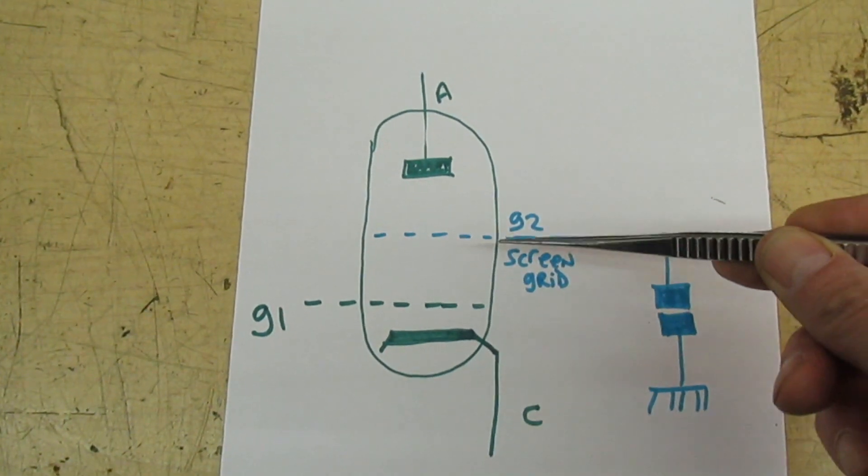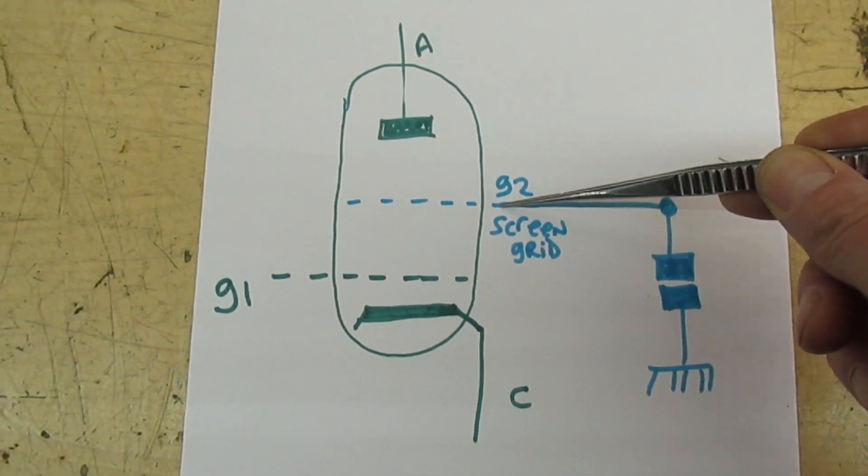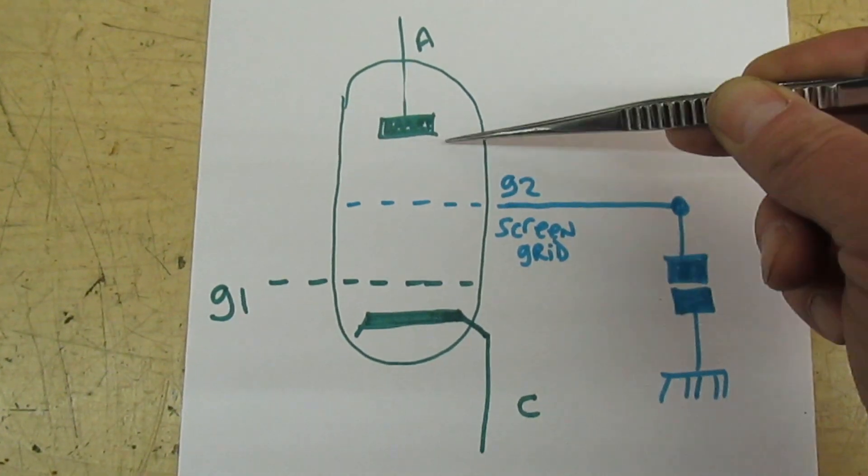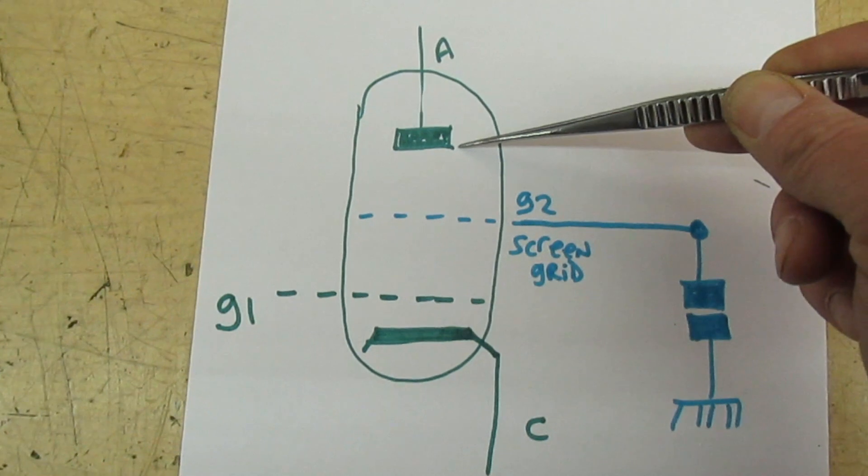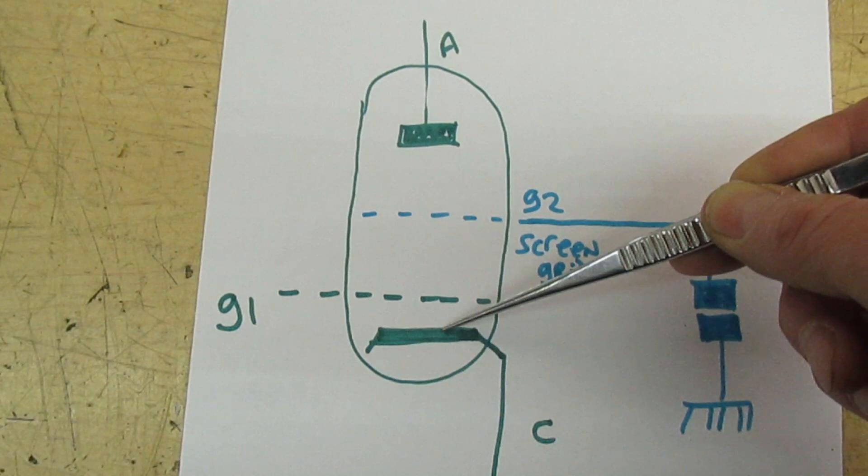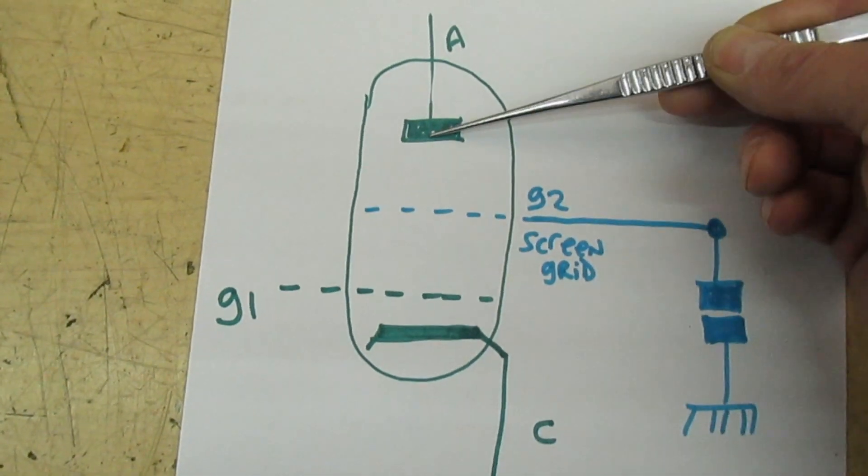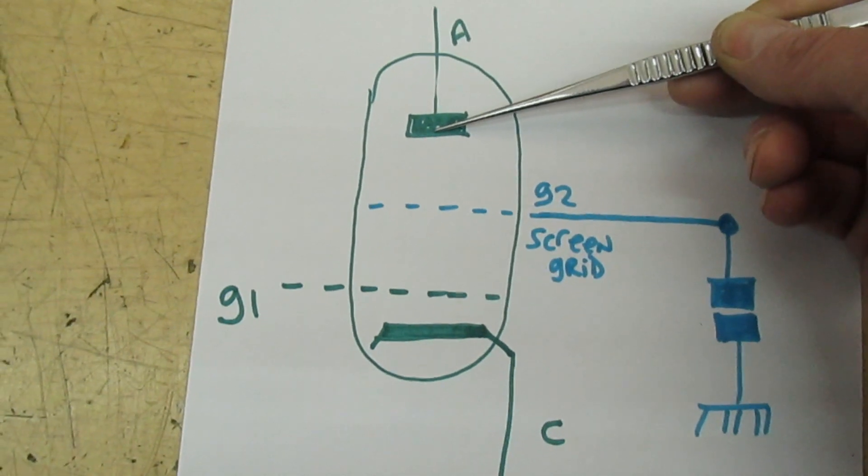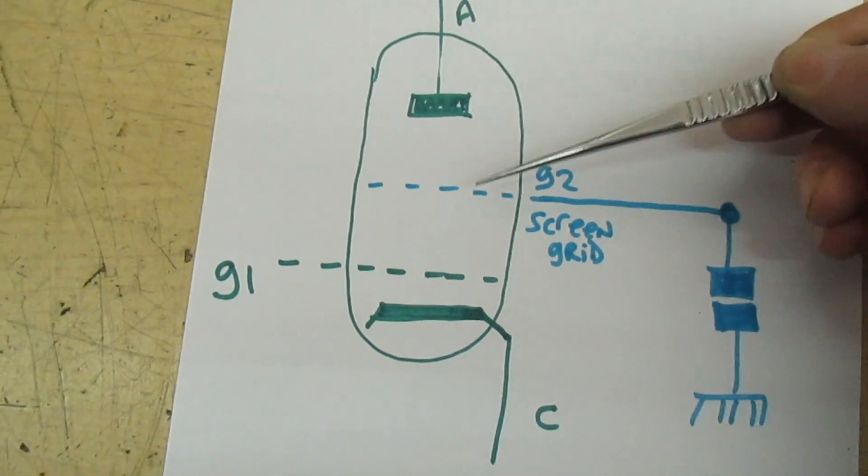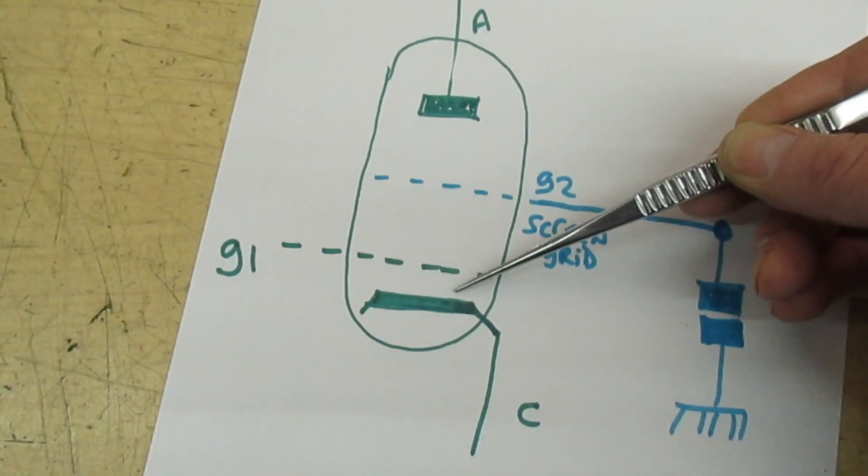We need to have a voltage on the screen grid. We need to make the screen grid voltage a little bit lower than the anode voltage so the electrons can pass straight through the screen grid to the anode. The anode's got to be more positive to attract the electrons.